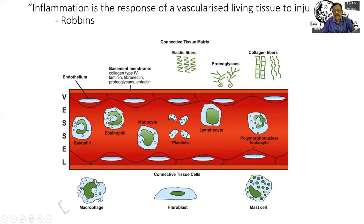What happens here is — this is just to show you what elements are involved. This is a blood vessel; I am finding the endothelium and these are the various cells within our blood: lymphocytes, monocytes, eosinophils, neutrophils, the platelets, etc. Also, in the surrounding region, we have other cells such as the mast cell, the fibroblast, and the macrophage. The macrophage is supposed to be the tissue counterpart of the monocyte. There are also other elements such as elastic fibers and collagen fibers. Let us see their role in inflammation.